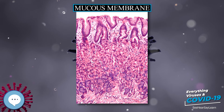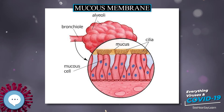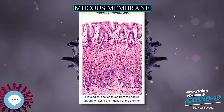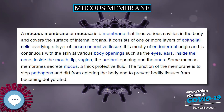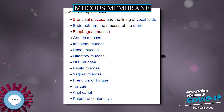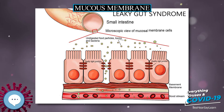A mucous membrane, or mucosa, is a membrane that lines various cavities in the body and covers the surface of internal organs. It consists of one or more layers of epithelial cells overlying a layer of loose connective tissue. It is mostly of endodermal origin and is continuous with the skin at various body openings such as the eyes, ears, inside the nose, inside the mouth, lips, vagina, the urethral opening, and the anus. Some mucous membranes secrete mucus, a thick protective fluid. The function of the membrane is to stop pathogens and dirt from entering the body.